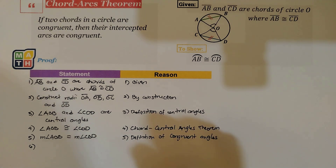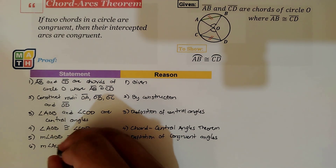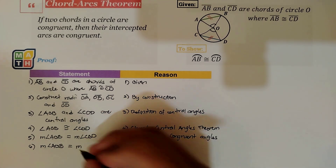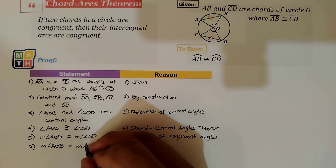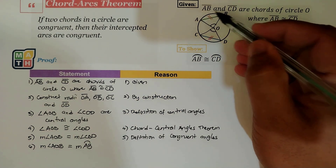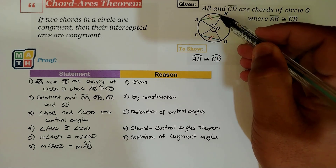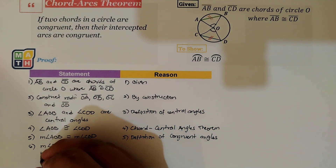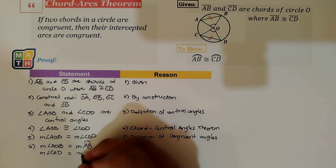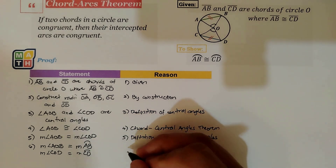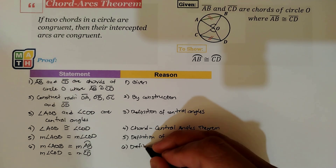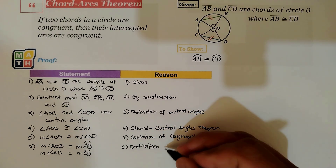There is an important statement in this proof: the measurement of angle AOB is equal to the measurement of arc AB. This is also true for the measurement of angle COD, which equals the measurement of arc CD. This is based on the definition of the measurements of intercepted arcs.